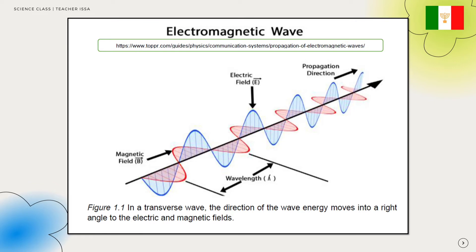Since these fields are located at right angles to the direction of motion of the wave, electromagnetic waves are considered as transverse waves. This means that both electric and magnetic fields oscillate perpendicular to each other and to the direction of the propagating wave.